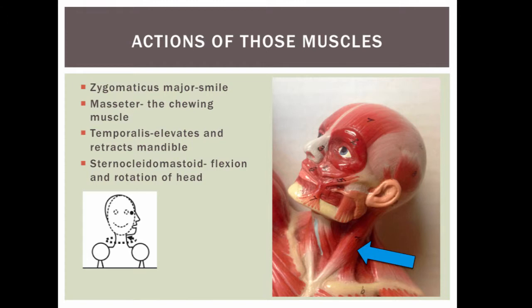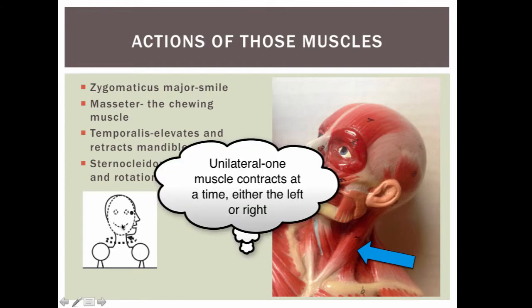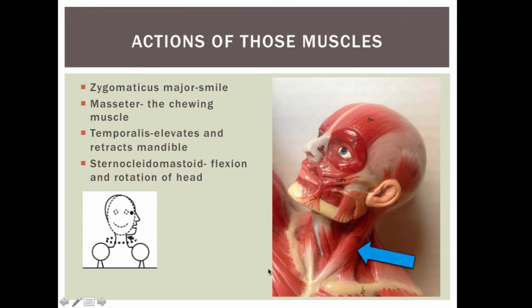The temporalis muscle helps to elevate and retract the mandible. And then the sternocleidomastoid helps to not only flex but to rotate the head, which is what we see here in this picture — rotating the head from left to right, which is called a unilateral motion, meaning both left and right.